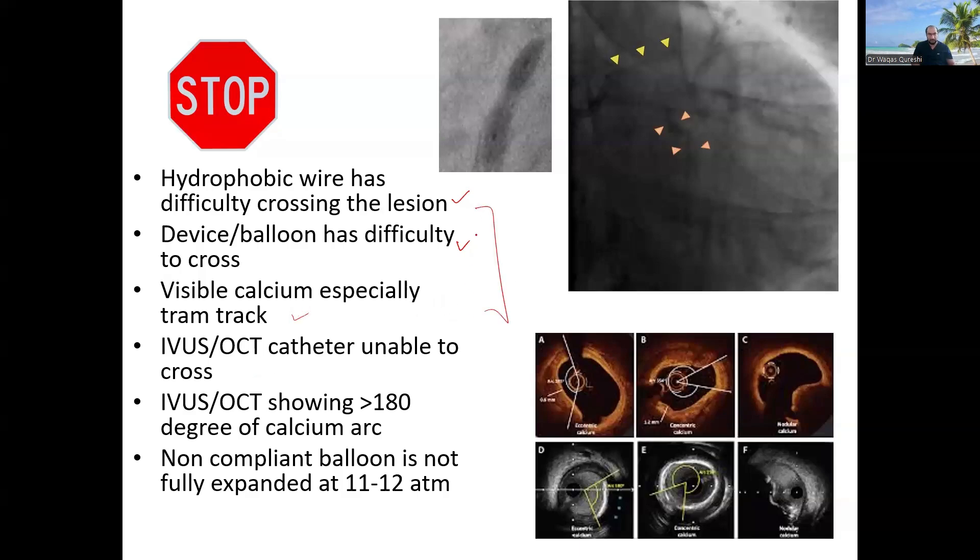If I can see the visible calcium, then definitely atherectomy. However, if you are not very pro-atherectomy as I am, you can consider doing IVUS or OCT evaluation. If the catheter is not crossing, definitely atherectomy. So these are all the points that go kind of in descending order where you should start thinking about atherectomy.